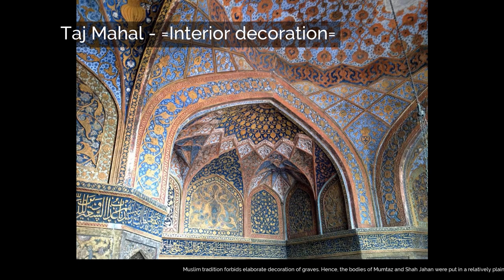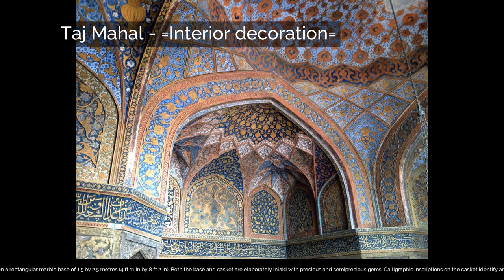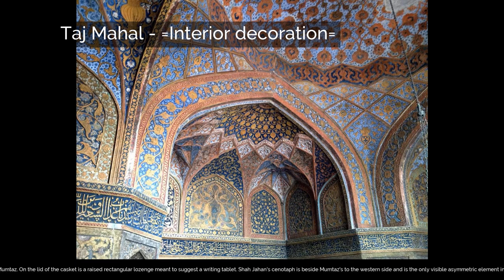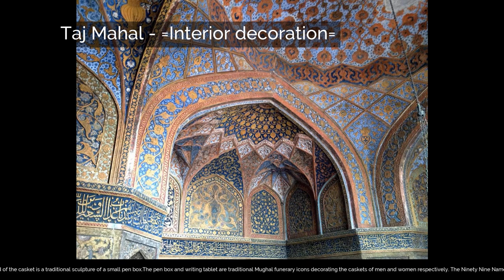Muslim tradition forbids elaborate decoration of graves. Hence, the bodies of Mumtaz and Shah Jahan were placed in a relatively plain crypt beneath the inner chamber with their faces turned towards Mecca. Mumtaz Mahal's cenotaph is placed at the precise center of the inner chamber on a rectangular marble base of 1.5 by 2.5 meters. Both the base and casket are elaborately inlaid with precious and semi-precious gems. Calligraphic inscriptions on the casket identify and praise Mumtaz, and on the lid is a raised rectangular lozenge meant to suggest a writing tablet. Shah Jahan's cenotaph is beside Mumtaz's to the western side and is the only visible asymmetric element in the entire complex. His cenotaph is bigger than his wife's but reflects the same elements — a larger casket on a slightly taller base, decorated with lapidary work and calligraphy. On the lid is a traditional sculpture of a small pen box. The pen box and writing tablet are traditional Mughal funerary icons decorating the caskets of men and women respectively.